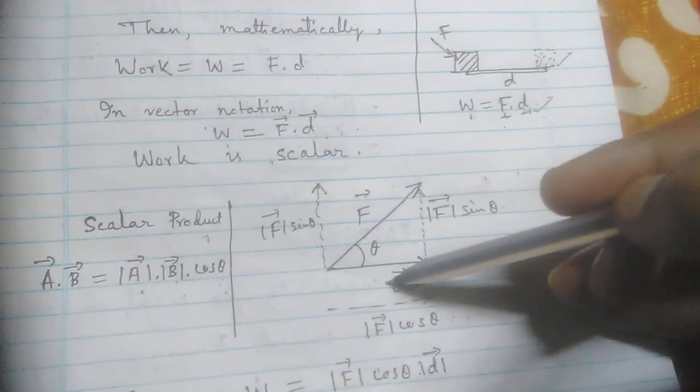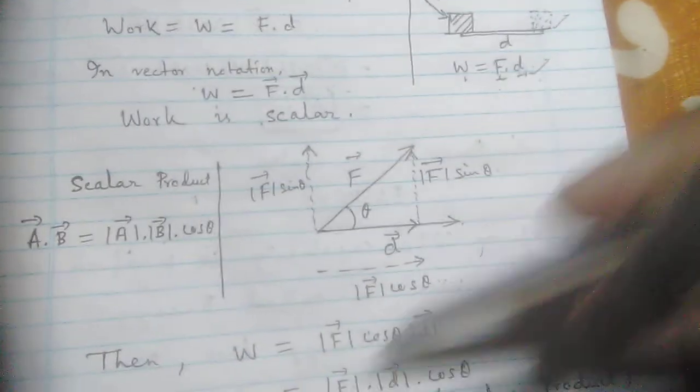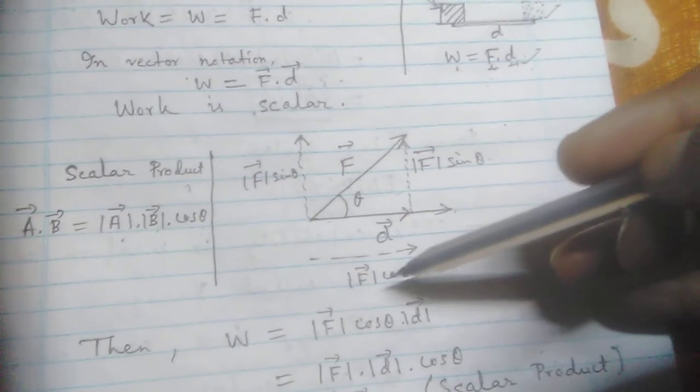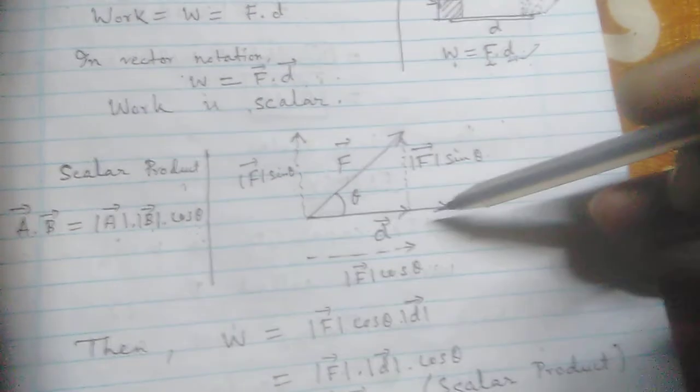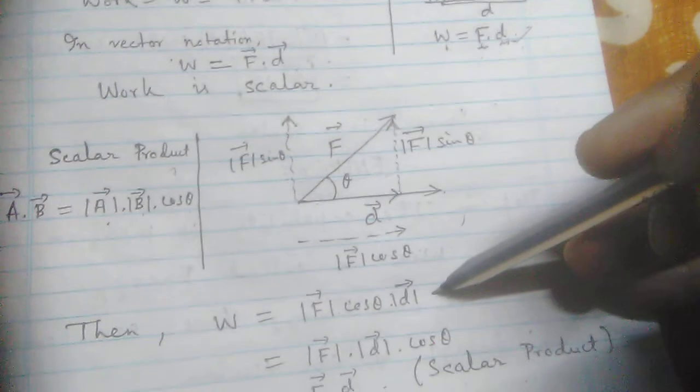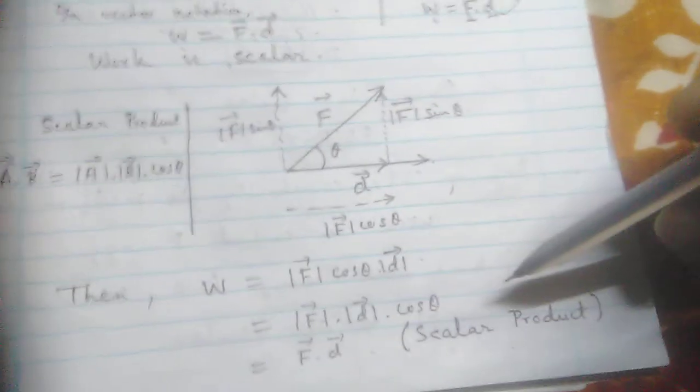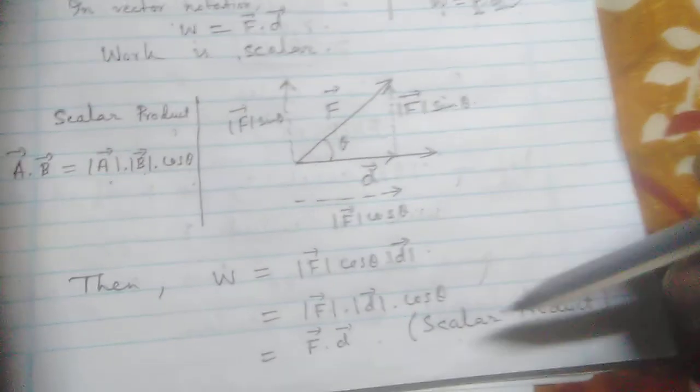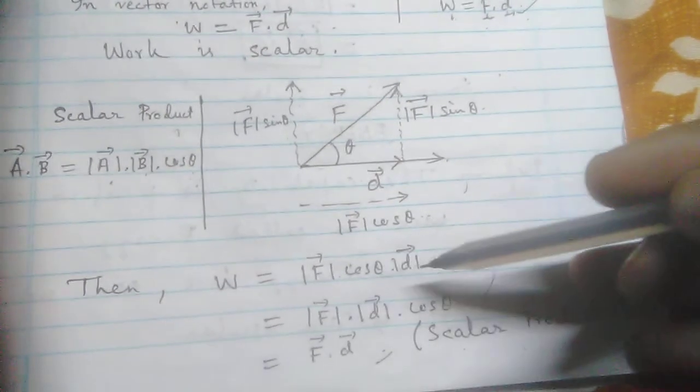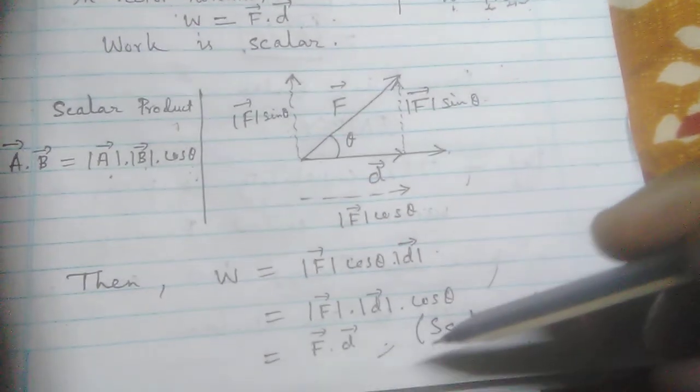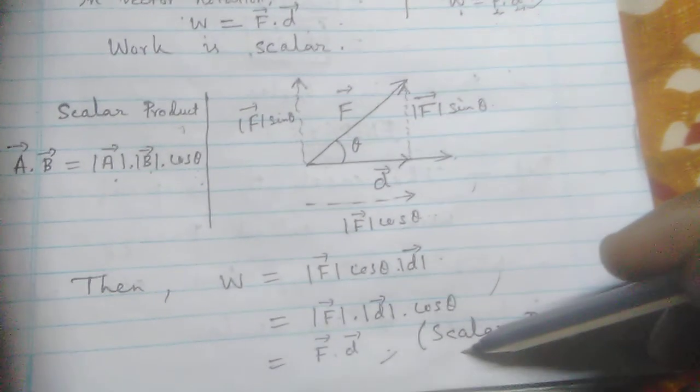take this component and the d direction. So here work will be the modulus of the vector times cos theta times the direction d modulus. So it can be written in this form and that's why you get the scalar form of the two vectors. Here we get the work's mathematical expression in terms of